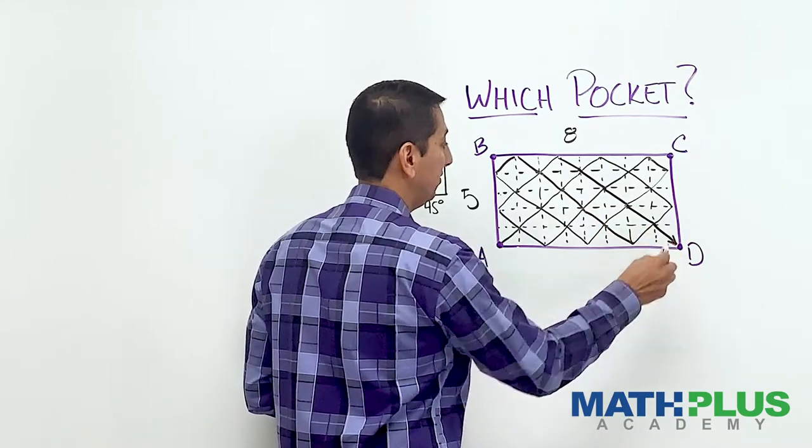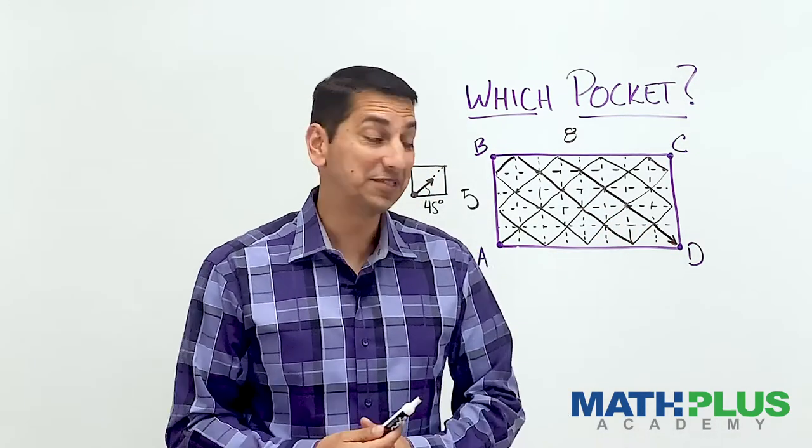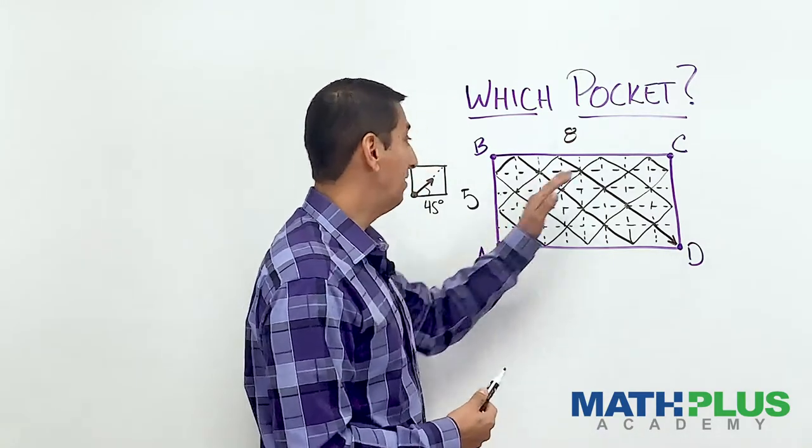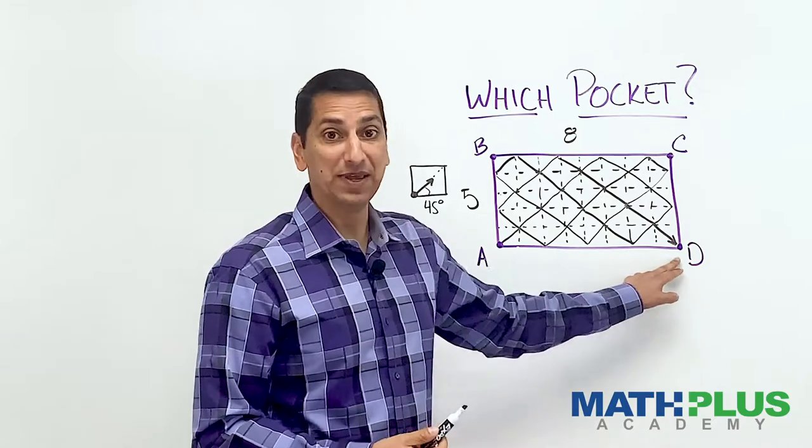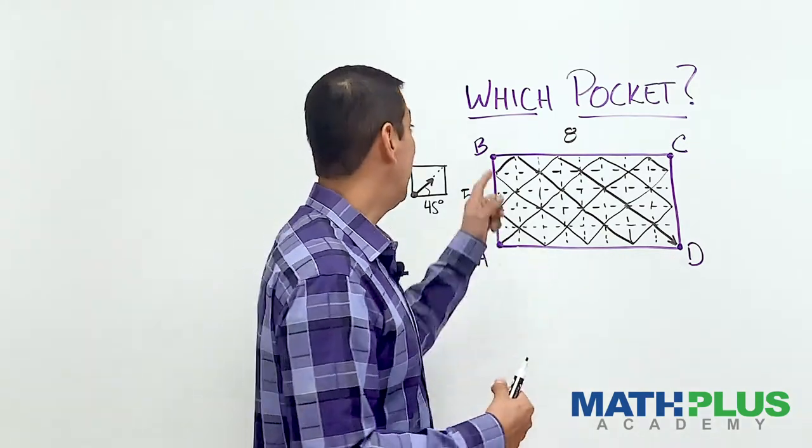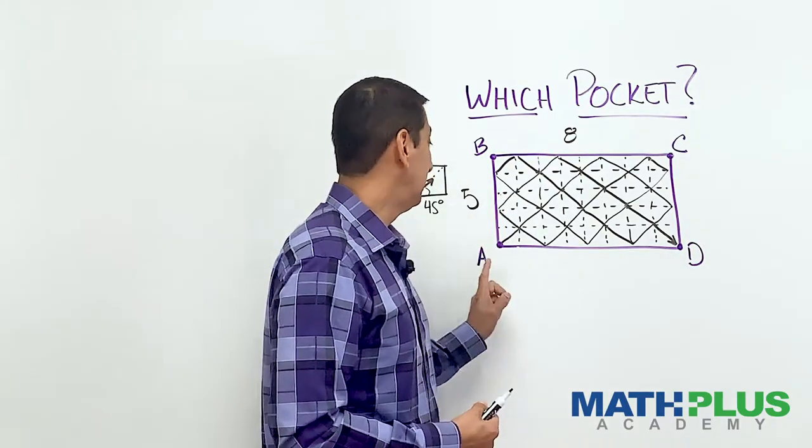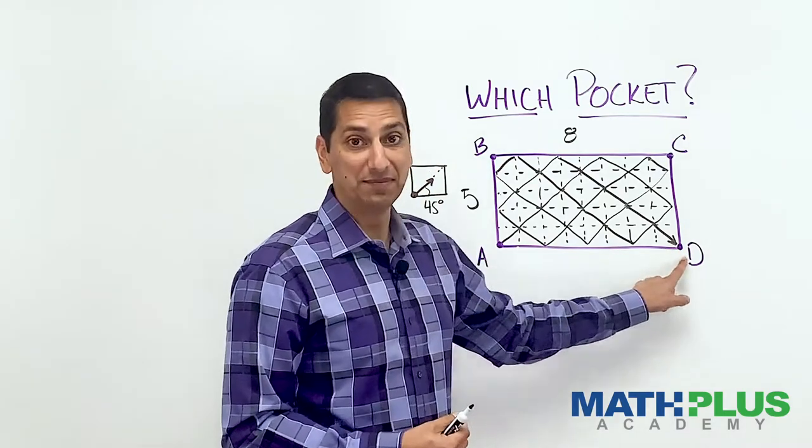I don't know if this thing is ever going to end. Oh, there we go. So this one started from A, went all over the entire board, and ended up in D. So for my eight by five table, a shot from A ends up in D.